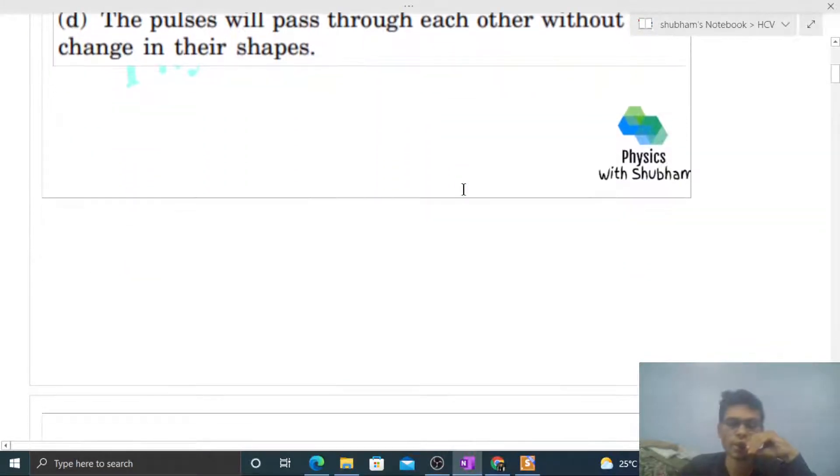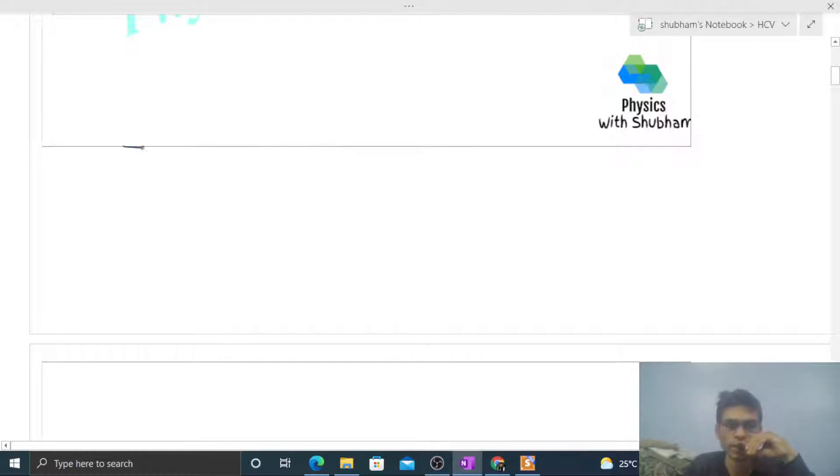So pehle hum baat karte hain string ki. Is tarah se humari paas yeh string hai and we have two wave pulses. This is my first pulse and this is my second pulse. Inverted hai, it means ek upar hoga aur ek neeche hoga.